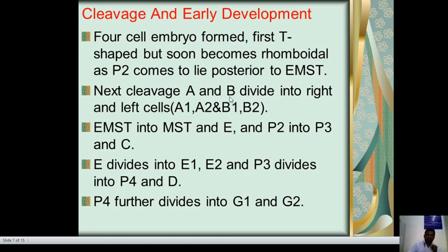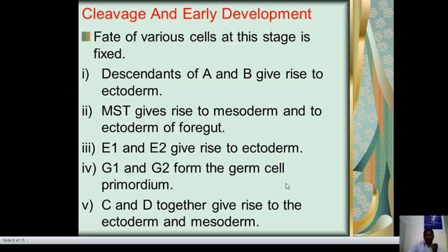In the next cleavage, A and B divide into A1, A2, B1, and B2. EMST divides into MST and E, and P2 divides into P3 and C. E divides into E1 and E2, and P3 divides into P4 and D. P4 further divides into G1 and G2.